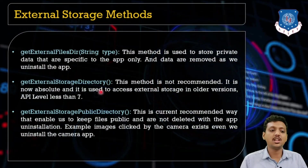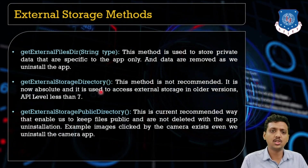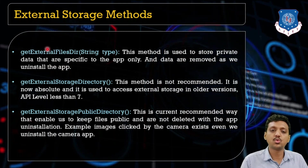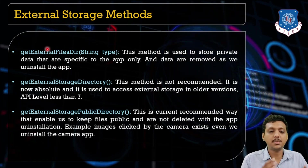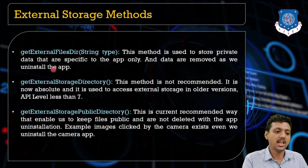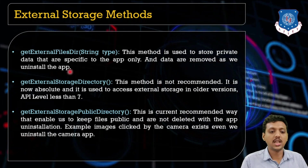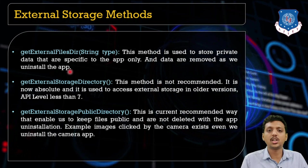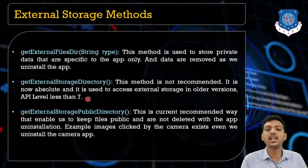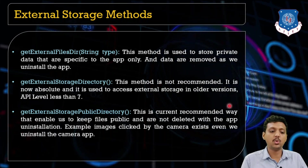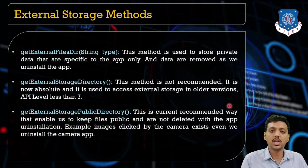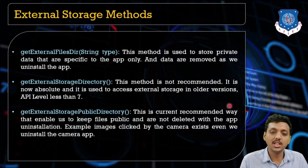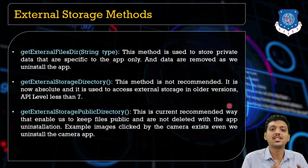Next, the external storage methods. There are some methods to work with external storage. The first method is getExternalFilesDir, which is used to store private data specific to a particular app only. Next is getExternalStorageDirectory, which is now deprecated and no longer recommended. The next one is getExternalStoragePublicDirectory, which is the currently recommended way to keep files publicly — files that are not deleted with app uninstallation.